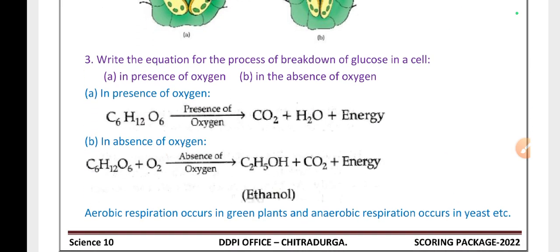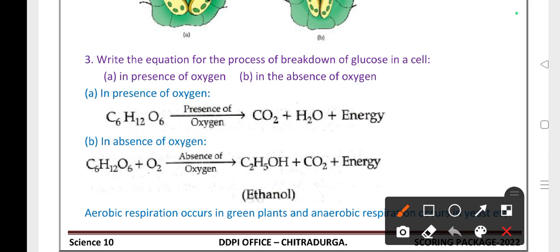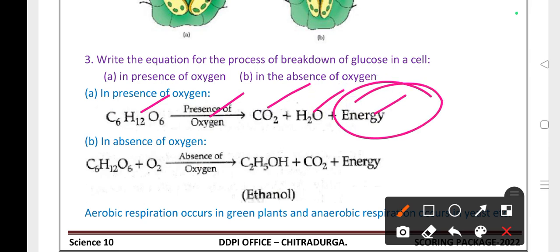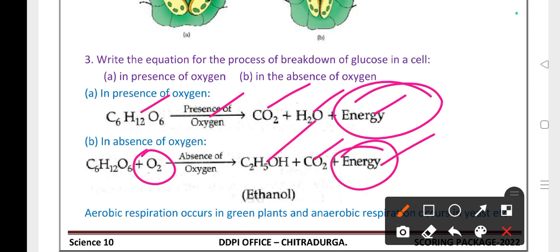Write the equation for the process of breakdown of glucose in a cell in the presence of oxygen. In the presence of oxygen, glucose (C6H12O6) breaks down into carbon dioxide, water, and energy — a large amount of energy is released. In the absence of oxygen, C6H12O6 undergoes anaerobic respiration. Some organisms like bacteria produce ethyl alcohol (ethanol), carbon dioxide, and a small amount of energy.